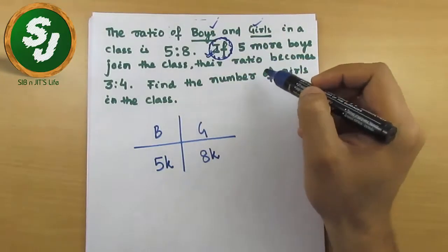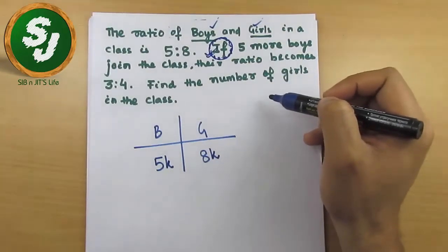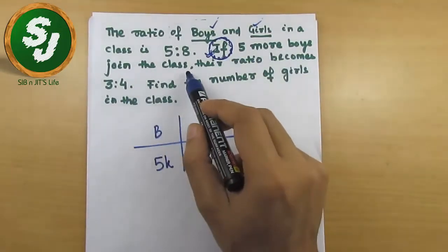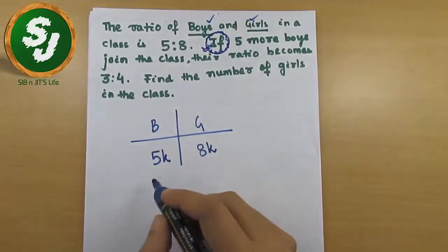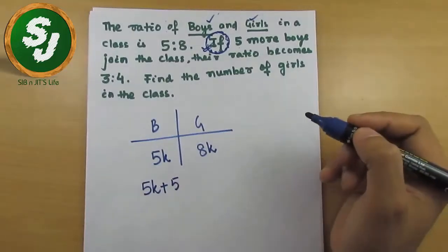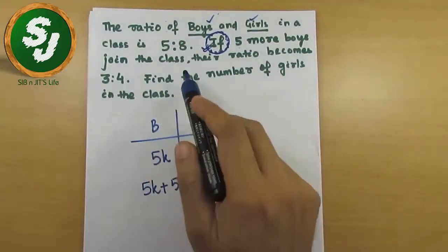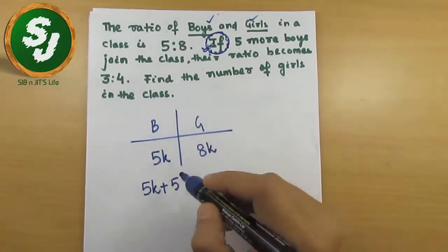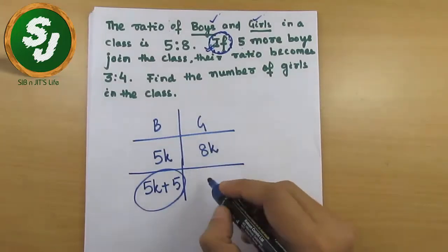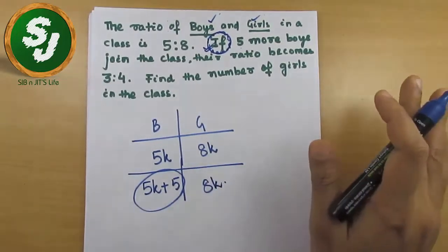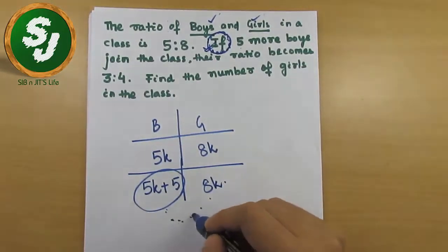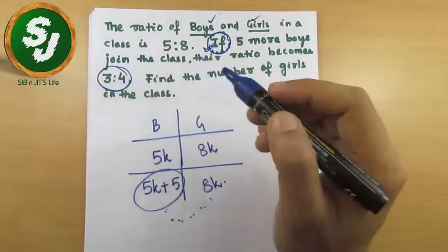For conditional ratio based questions, you have to frame an equation. So using the k concept: boys = 5k, girls = 8k. If five more boys join the class, the number of boys becomes 5k plus 5. There is no change in the number of girls, so girls remain 8k. After this change, the ratio of boys to girls becomes 3 is to 4.